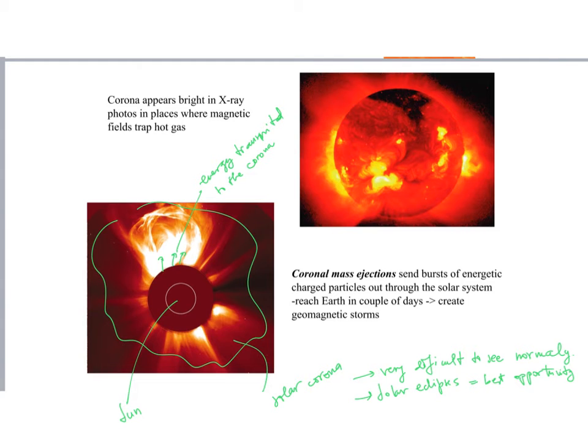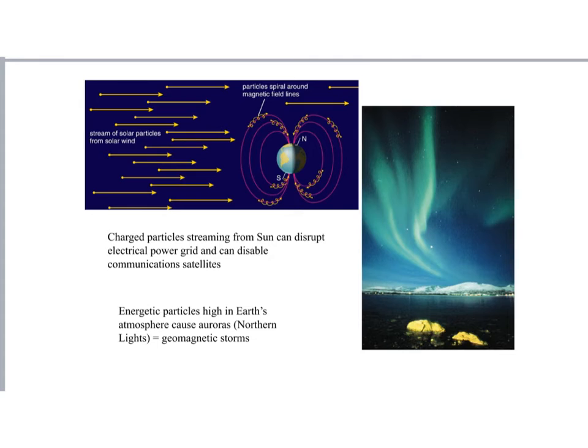Another thing that happens at the surface of the Sun are the coronal mass ejections. Here we have bursts of energetic charged particles that come out a lot. They're so powerful that they go through the whole solar system, basically reaching the earth in just a couple of days, and they create the so-called geomagnetic storm. One example of those are the northern lights or the aurora.